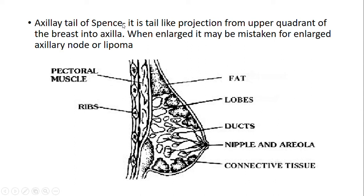Axillary tail or Spence: it is a tail-like projection from the upper quadrant of the breast to the axilla. When enlarged, it may be mistaken for an axillary lymph node or lymphoma.